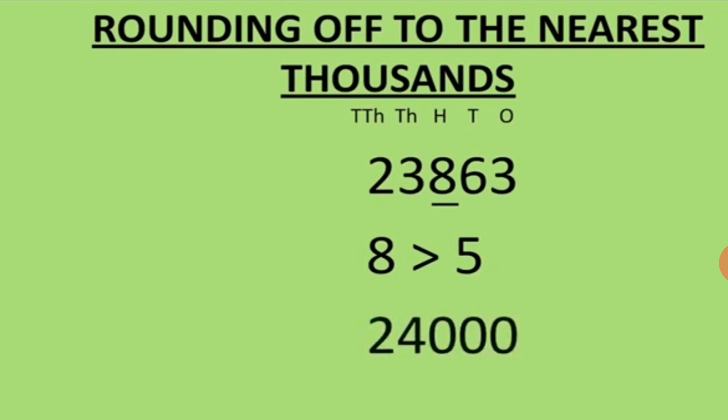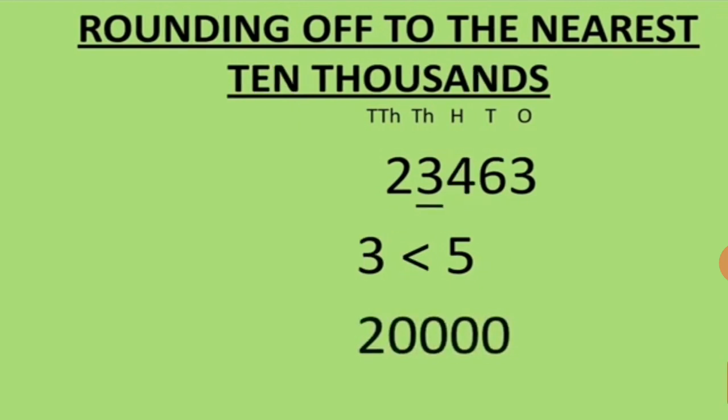Now the next round off is to the nearest 10,000. The process is the same. The number is 23,463. We will look at the number to the right of the ten-thousands place, which is 3. Now 3 is smaller than 5, so when the number is smaller than 5 we keep the ten-thousands digit the same.